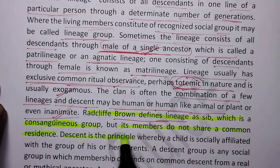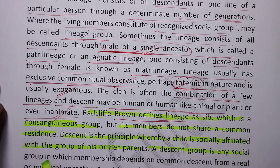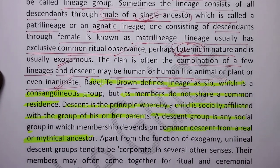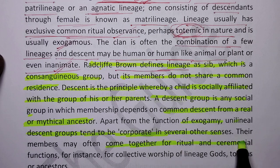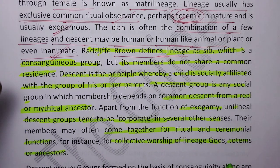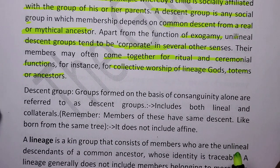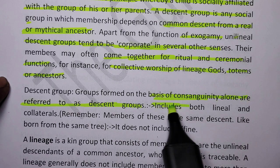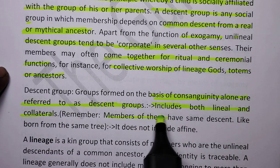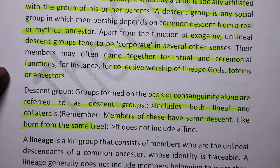Descent is the principle whereby a child is socially affiliated with a group of his or her parents. Descent groups formed on the basis of consanguinity alone are referred to as descent groups. These include both lineal and collateral relatives. The members of these groups have the same descent — like born from the same tree. It does not include affines.